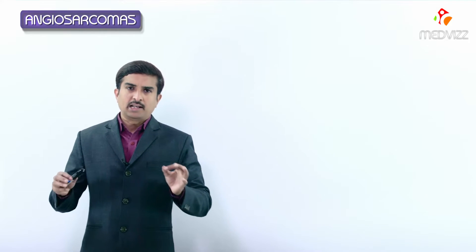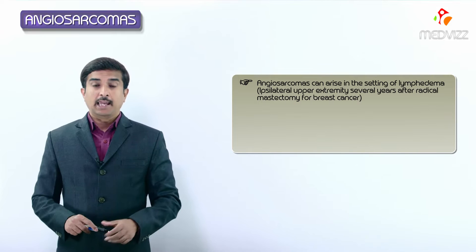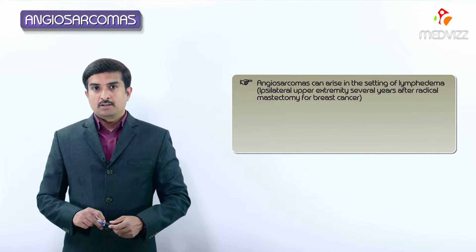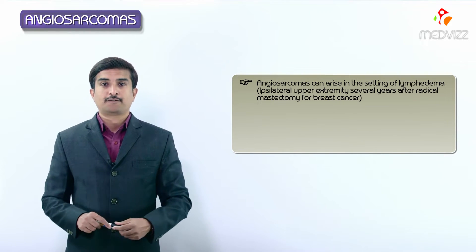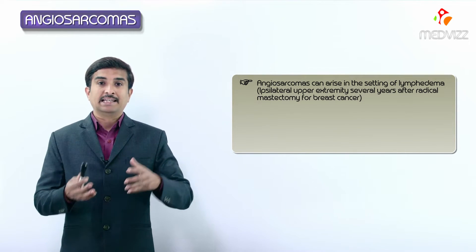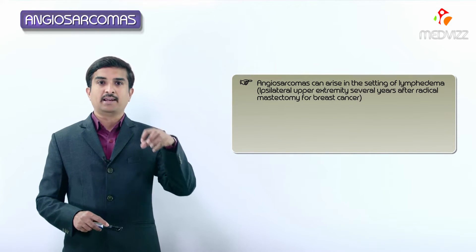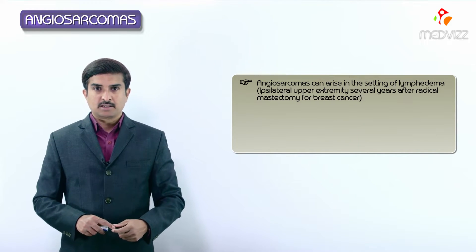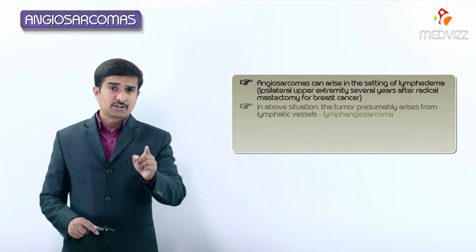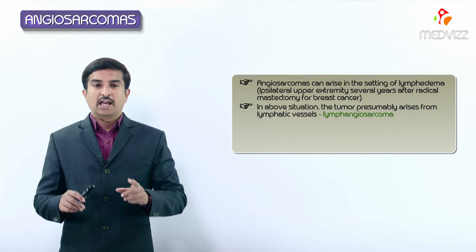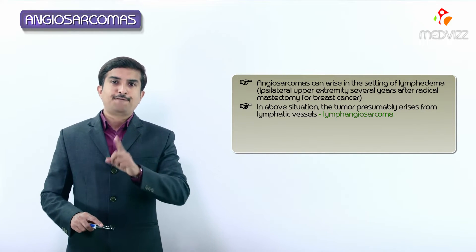Angiosarcomas can arise in the setting of lymphedema, classically in the ipsilateral upper extremity. For example, whenever there is lymphedema in the upper extremity for several years after radical mastectomy - that is, with lymph node resection for breast cancer - angiosarcoma may arise where lymphedema is present because of the resection of these channels.